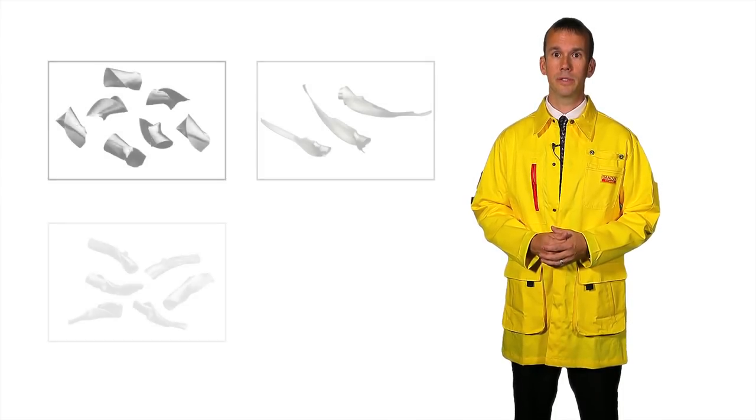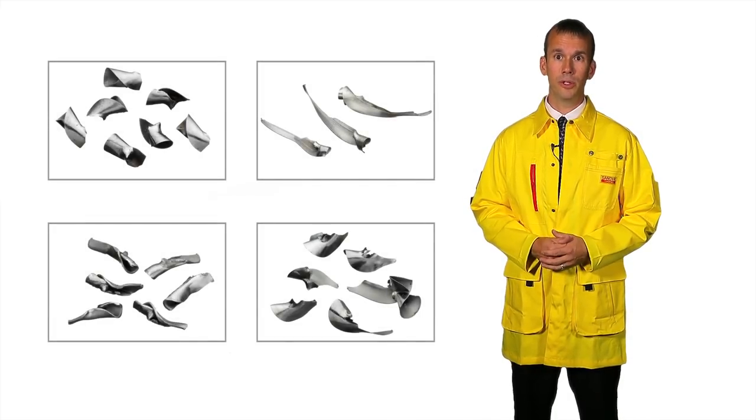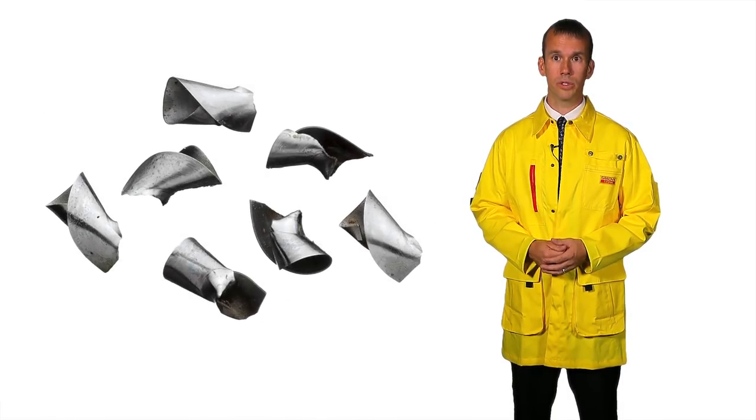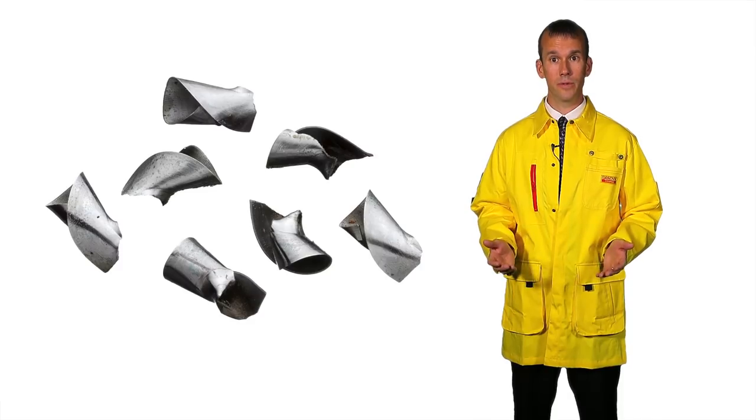Now let's take a closer look at some typical chip shapes and sizes with this chip chart. The ultimate goal is to achieve a chip with a cone or a C shape, which is not too long as featured in this first square.